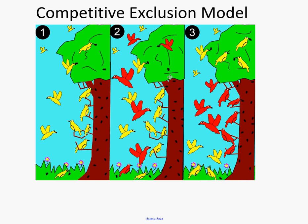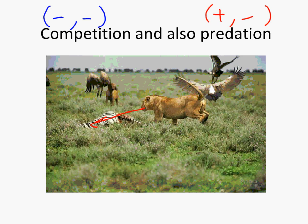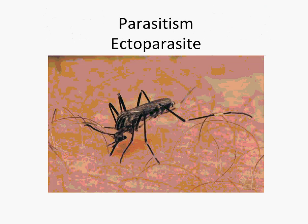Predation is one species eating another. This includes herbivory — eating plants — which is also considered predation since plants are living things. Plants try to combat this: some have thorns and tough outer coverings, others just grow really fast like grass. This is a lot more than just a zebra being killed on a nature documentary — it's happening all the time. Another type of plus-minus interaction is parasitism.